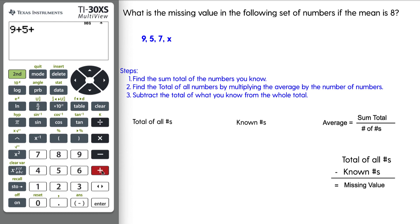Let's do 9 plus 5 plus 7, equals 21. So we're going to have the total of all the numbers we need to find. The average here is 8, and there's four numbers. And this is what we want, this is the unknown, solving for X for the sum total. So again, what we do is we multiply, find the total of all the numbers by multiplying the average, which is 8, by the number of numbers, which is 4.